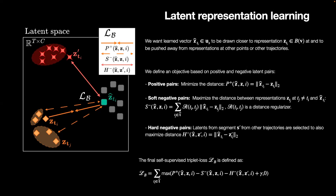The encoder is trained with the final self-supervised triplet loss with a combination of positive pairs, soft negative pairs, and hard negative pairs.